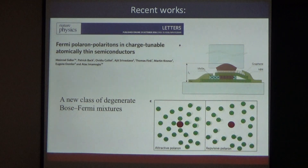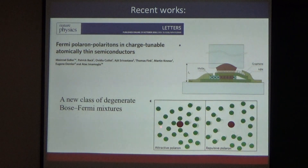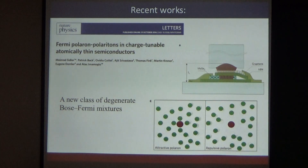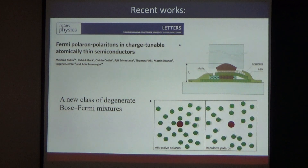By increasing the electrostatic gate voltage, you increase the electron concentration in the material until it is almost like a metal. Then you discuss the physics of the exciton, which is now behaving like an impurity. This impurity can form either an attractive polaron or a repulsive polaron, and these two modes couple with the cavity resonance. This physics was studied by a group from ETH, and they basically claim this is a new class of degenerate Bose-Fermi mixture, allowing very interesting many-body physics where you can control the electron density.